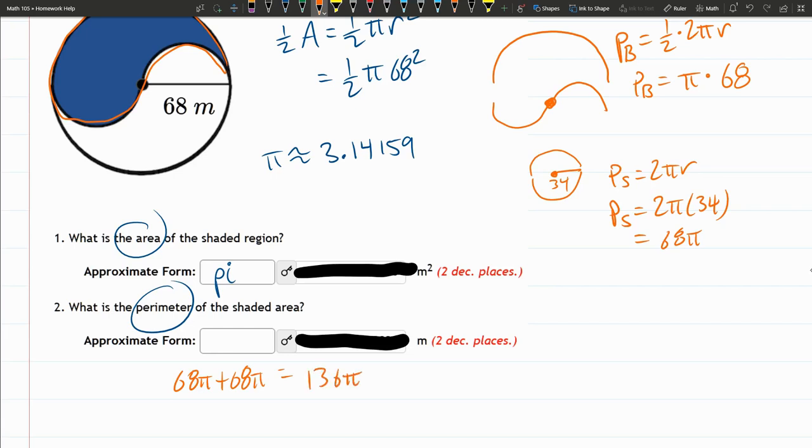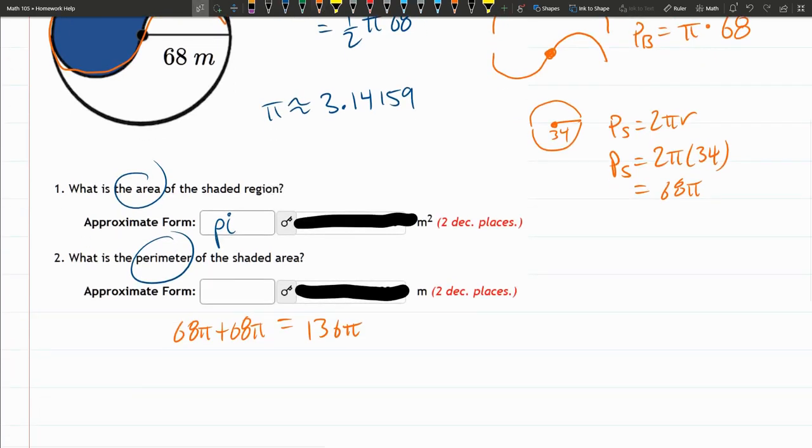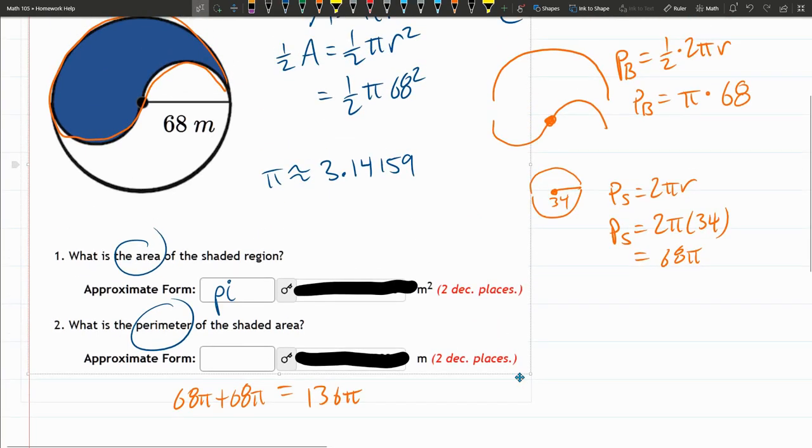So it could be accepted as that. You can also just write pi as 3.14159. All right, and that should give you these two answers.